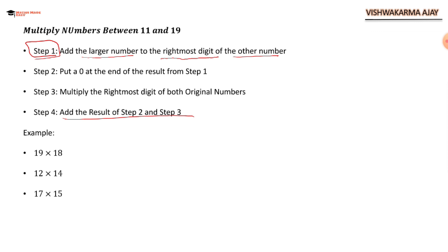Let's see an example: 19 times 18. The larger number is 19 and I am going to add 8 to it because this is the rightmost digit of the other number. So 19 plus 8 is equal to 27, and then I have to put 0: 270. Plus, multiply the rightmost digits: 9 times 8 are 72. Add the results from Step 2 and 3, so I am going to add 270 plus 72. That's 342.